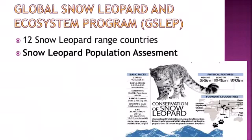Regarding conservation status, the snow leopard is classified as Vulnerable by IUCN and placed under Schedule 1 of the Indian Wildlife Protection Act 1972, giving it the highest protection in India. It is listed in Appendix 1 of CITES and the Convention on Migratory Species (CMS). In India, it is present in Jammu and Kashmir, Himachal Pradesh, Uttarakhand, Sikkim, and Arunachal Pradesh. Its habitat is cold and high mountains.